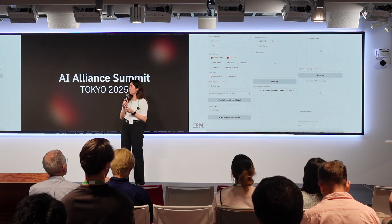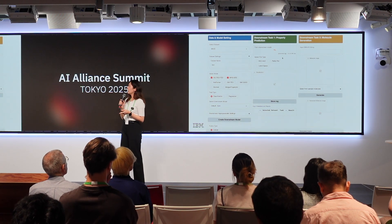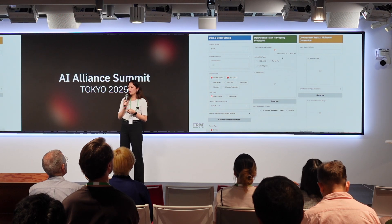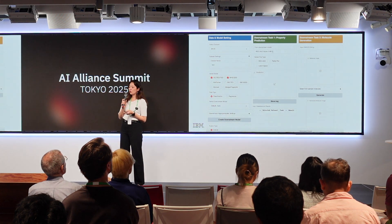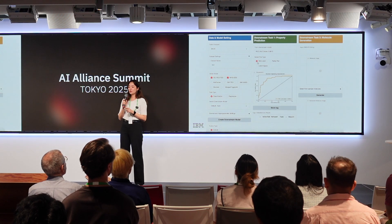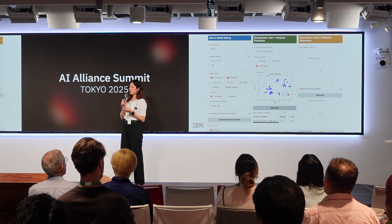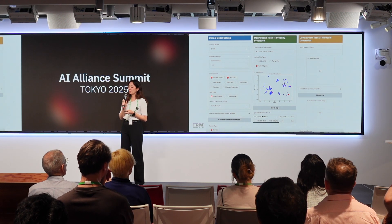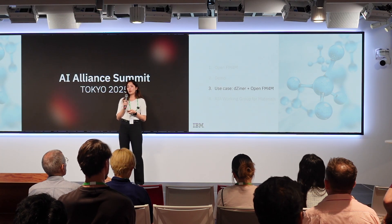Currently only naive concatenation fusion is available, though others are planned. You then start the training, which takes roughly 20 seconds. After training, you get the ROC score and can choose different types of visualizations of the model. You also have the option to store the results with the dataset name, models used, task, and ROC results.